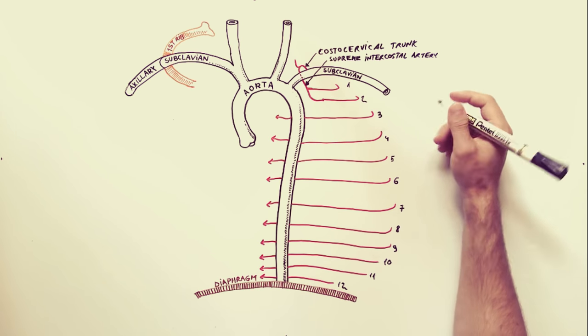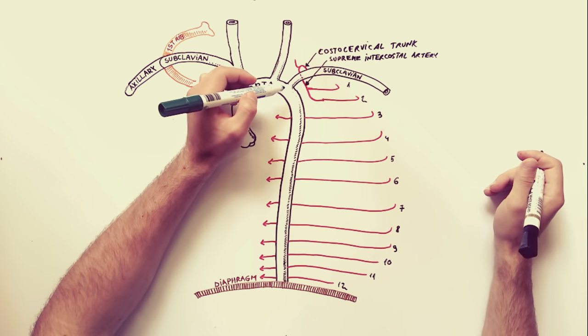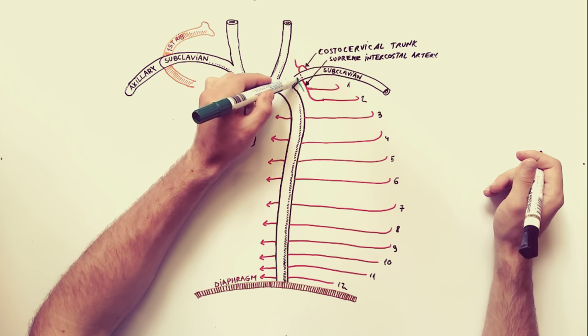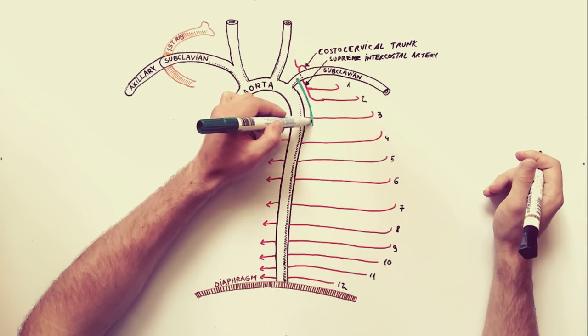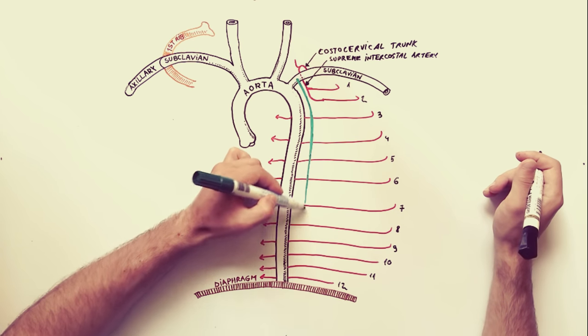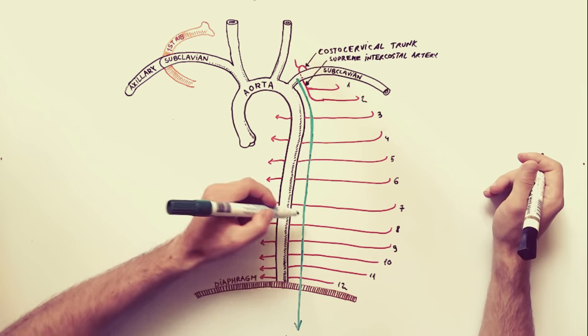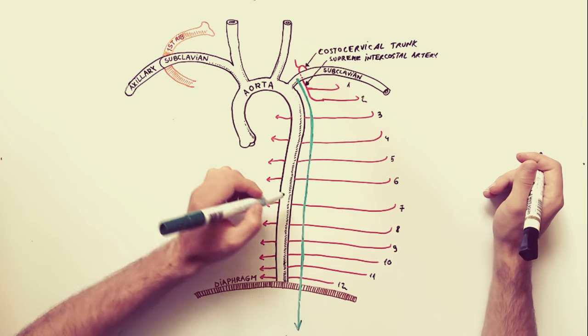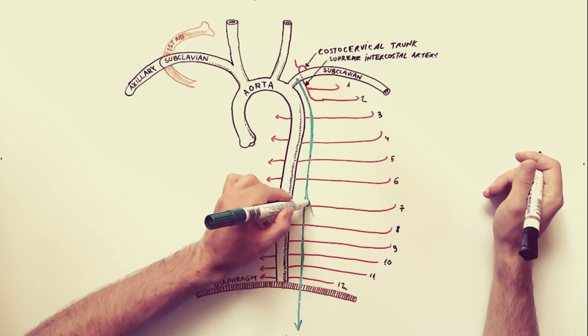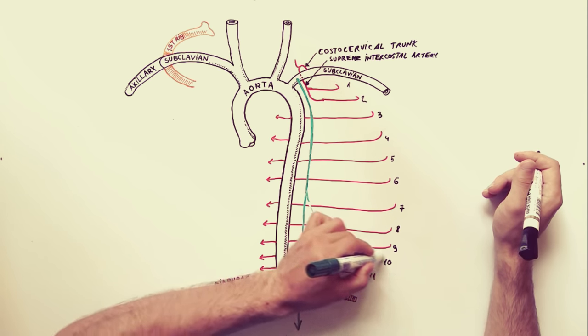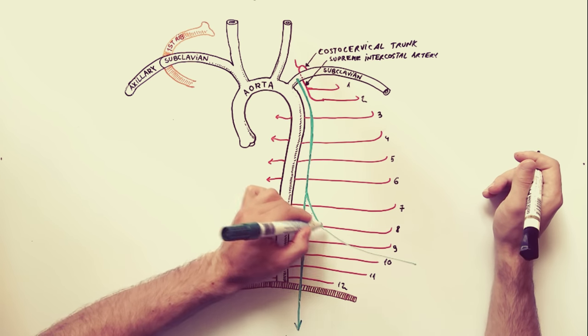The internal thoracic artery, previously called the internal mammary artery, arises from the first part of the subclavian artery. It enters the thorax behind the sternoclavicular joint. It then descends posterior to the upper 6 costal cartilages, immediately lateral to the sternum.